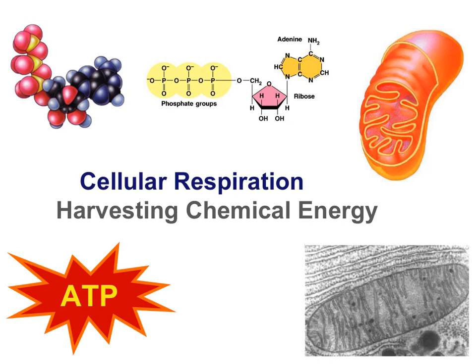In the next couple videos, we're going to start to talk about this process — the process of cellular respiration. The process of cellular respiration is really summed up in this subtitle. It's all about harvesting chemical energy. Chemical energy is just the potential energy that's locked up in molecules. We want to talk about the types of molecules that allow organisms at the cellular level, at the system level, at the organism level, to get work done.